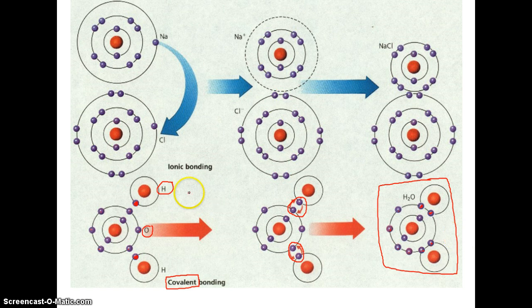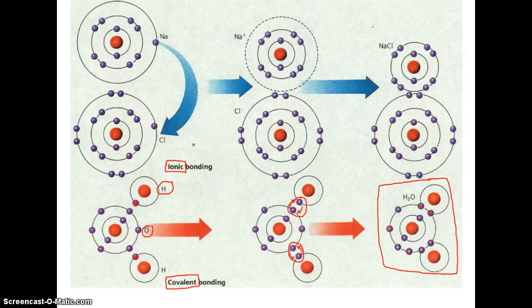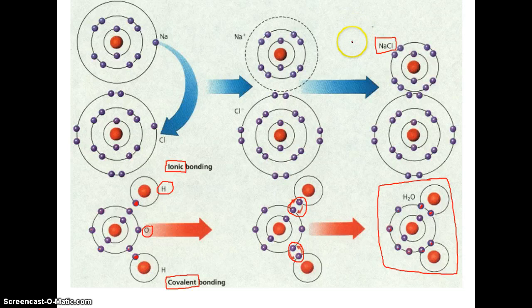A different type of bonding is known as ionic bonding. In ionic bonding, instead of sharing electrons, atoms will completely donate or completely receive — there is a complete transfer of electrons in an ionic bond. So instead of sharing, they're transferring. Let's look at the case of sodium chloride, NaCl — that's just the salt you pour on your french fries.